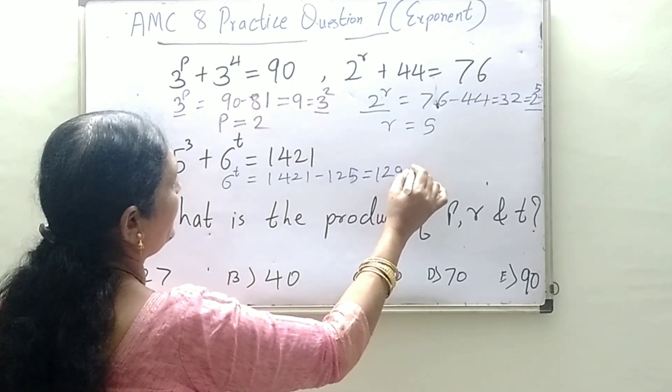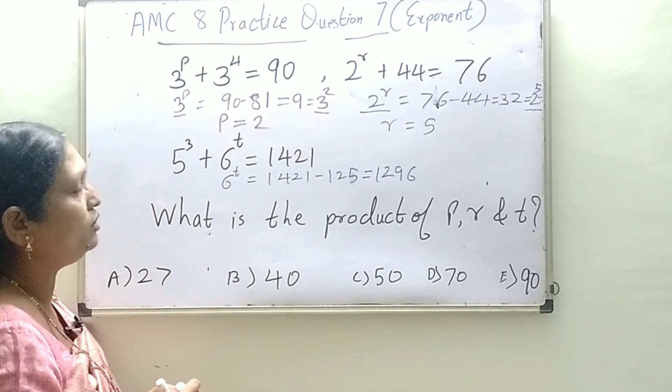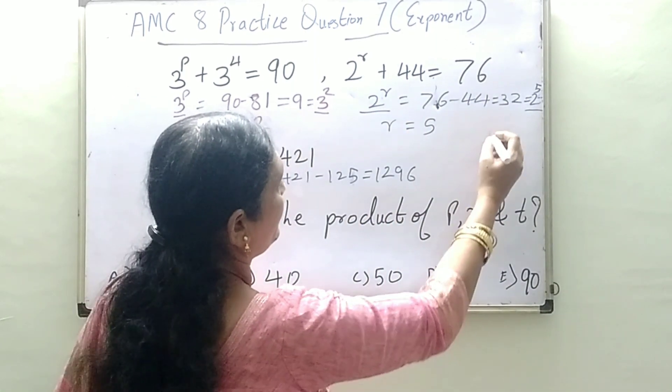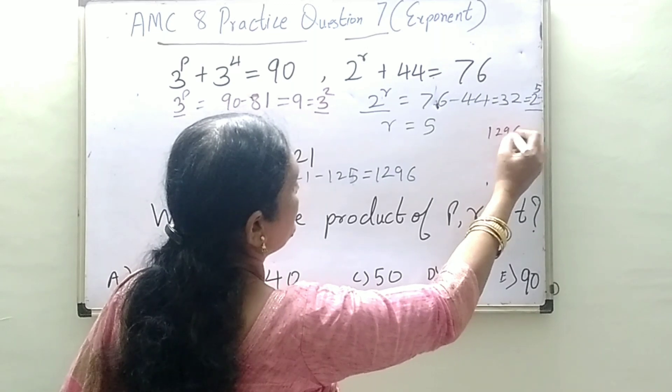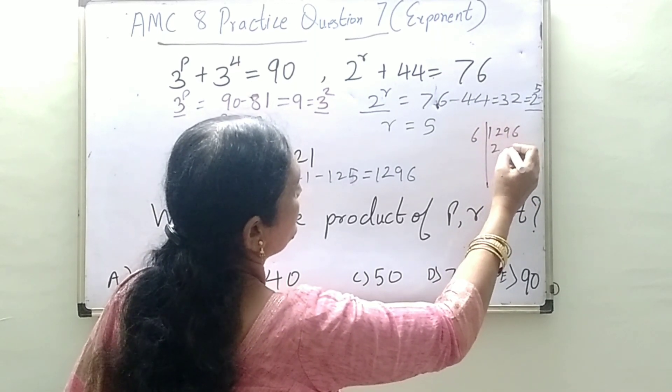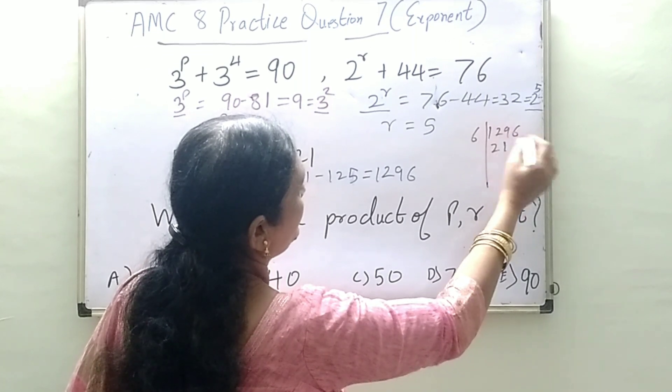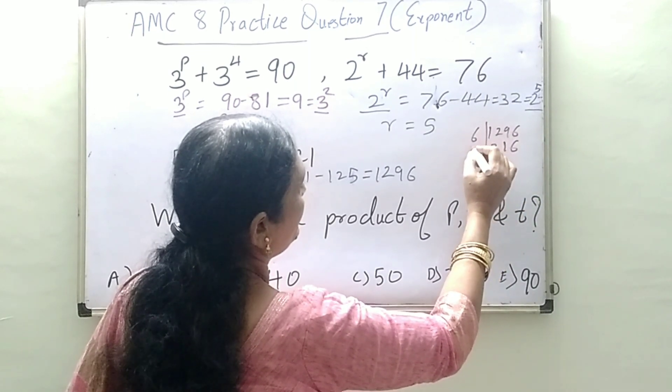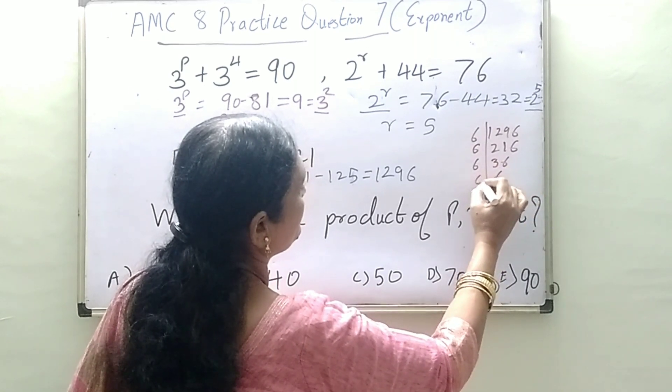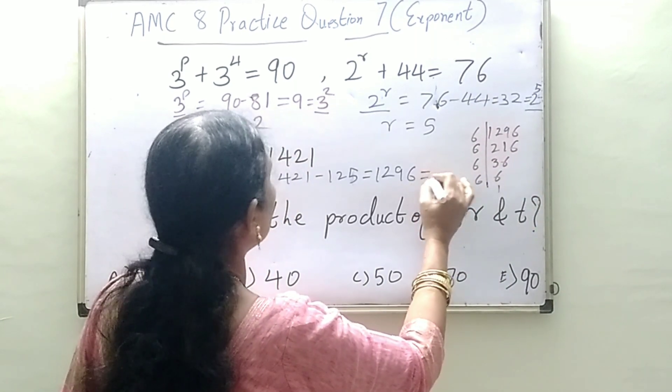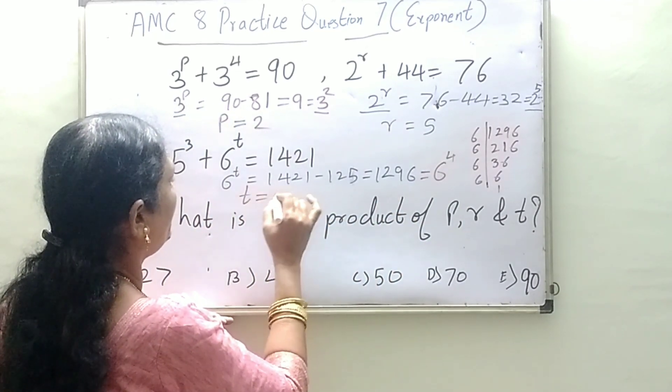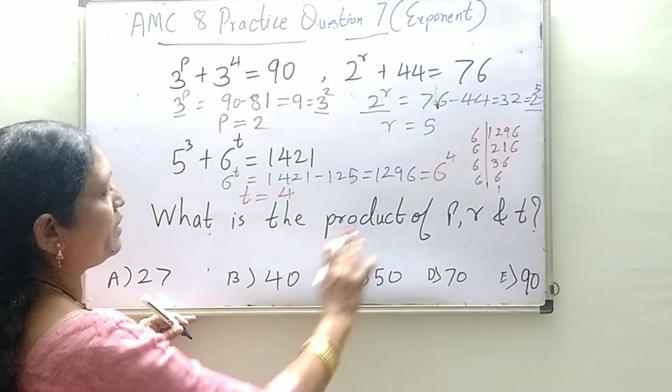Now 1296, we start doing the prime factorization. 1296 divided by 6 is 216. Dividing by 6 again gives 36. 36 divided by 6 is 6. 6 divided by 6 is 1. So this is 6 to the power 4, and you get the value of t as 4.